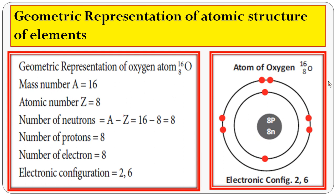How to draw the geometric representation of the oxygen atom: the center of the atom is the nucleus, containing 8 protons and 8 neutrons. The electrons revolve around the nucleus in different shells. The first shell contains 2 electrons, and the second shell contains the remaining 6 electrons. In this way, you represent the geometric representation of an oxygen atom.